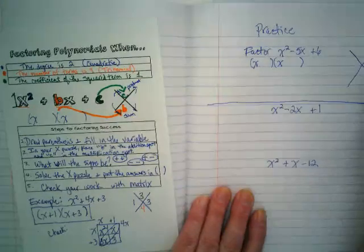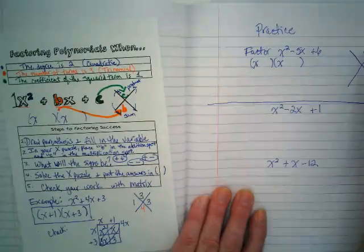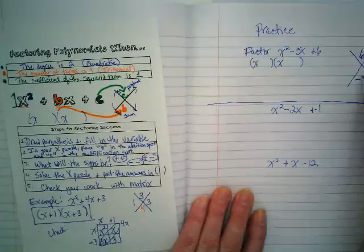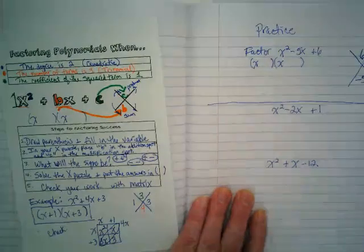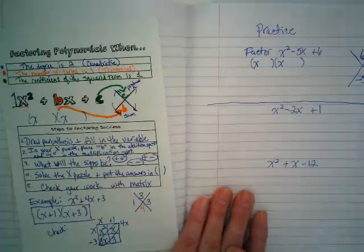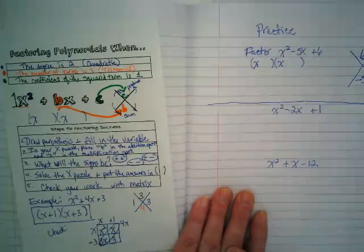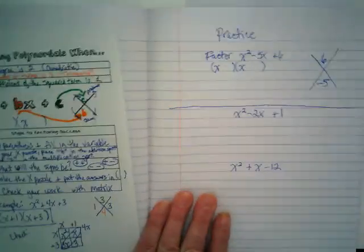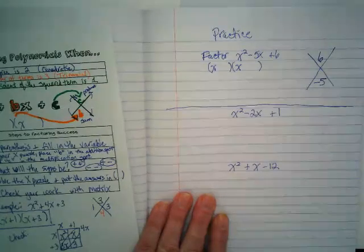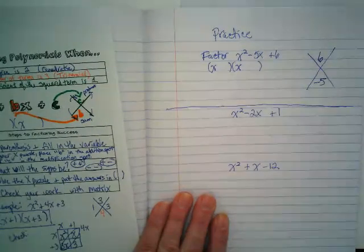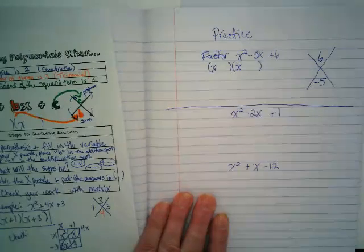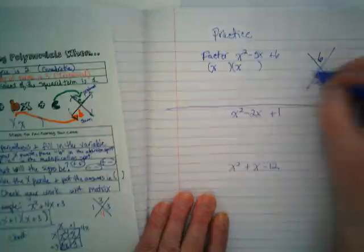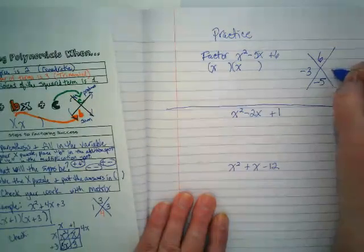Next step is our X puzzle. What goes on top? Six. And what goes in the base? Negative five. Now think about what will the signs be? If when I multiply I get a positive six, but when I add I get a negative five. Why a negative and a positive? If I have a negative and a positive when I multiply, am I going to get a positive? It's going to have to be two negatives. Negative three and negative two.